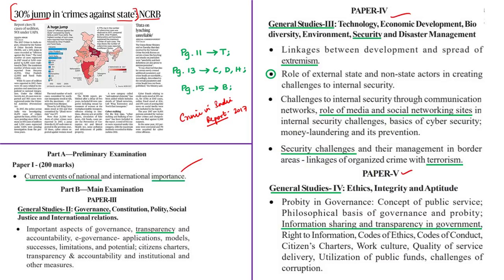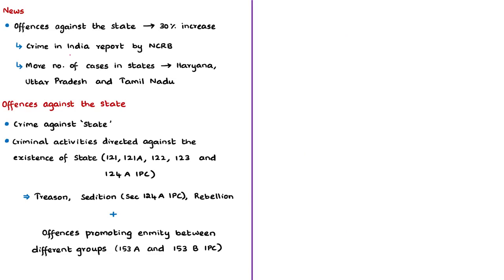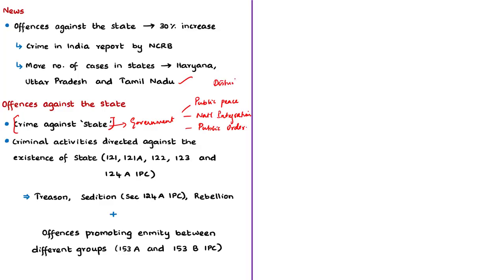Among the states and union territories, the states with more number of cases are Haryana, Uttar Pradesh, and Tamil Nadu. Offenses against the state, also known as crimes against the state, broadly cover all acts that disturb public tranquility, public peace, national integration, and public order. There are also criminal activities directed against the existence of the state itself, such as treason, sedition, and rebellion. Treason is the crime of betraying a nation by acts dangerous to national security, like selling military secrets to a foreign power or giving aid to the enemy in time of war.